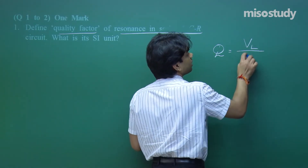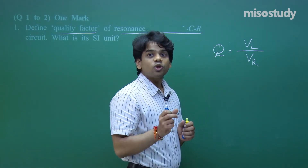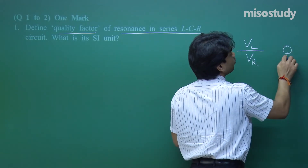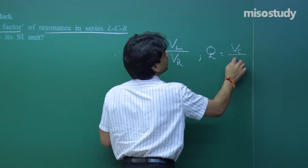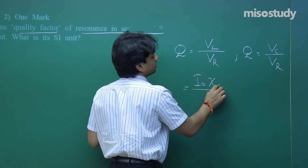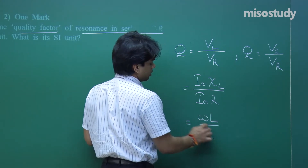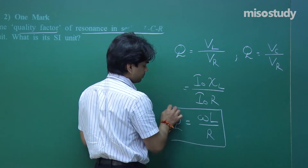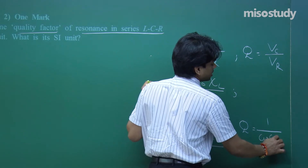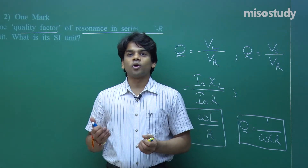So we can write Q = VL/VR. You should also know that it is also the ratio of voltage drop across the capacitor with respect to the voltage drop across the resistor, so Q = VC/VR. Using VL/VR, we get I₀·χL divided by I₀·R, which gives χL = ωL/R. Similarly for the capacitor part, Q = 1/(ωCR), since VC = I₀·(1/ωC).